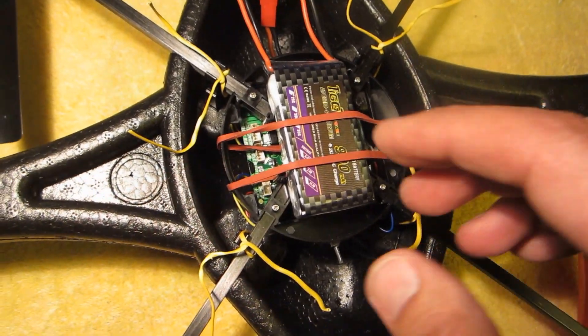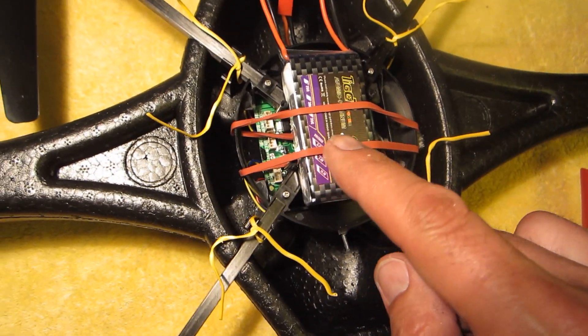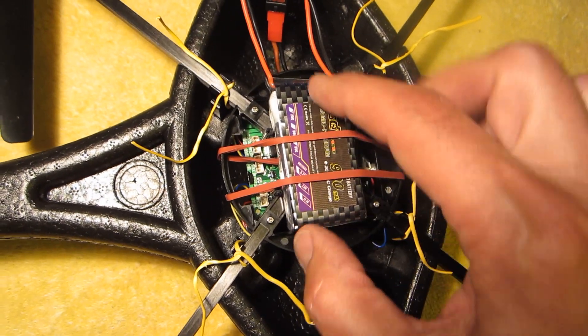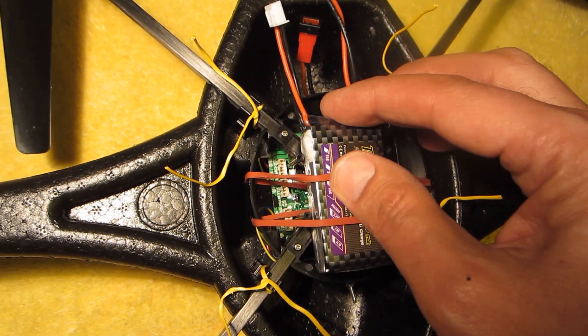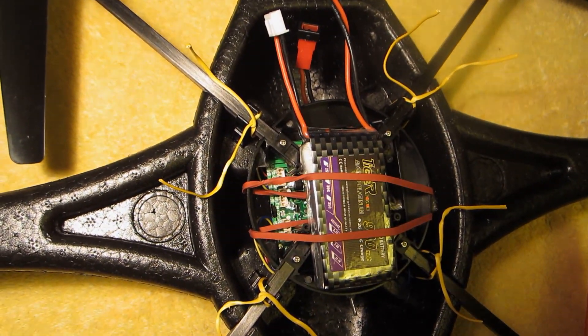And so this shows the quadcopter secured in place with the wire ties around it and the silicone band holding a larger battery. Hope you found this video helpful.